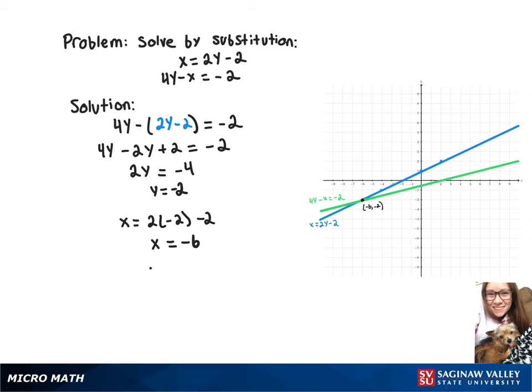So our solution to this system is negative 6, negative 2, which as you can see on our graph is where the two lines intersect.